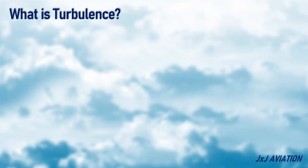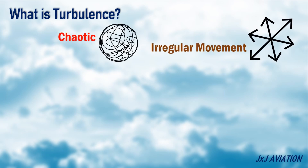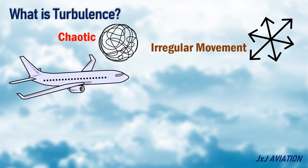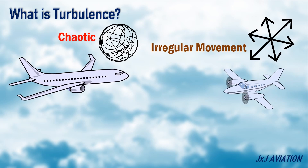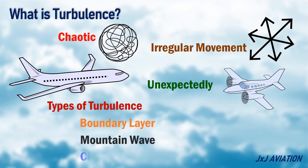First, let's look at what is turbulence. Turbulence refers to chaotic and irregular movement of air. This can cause an aircraft to shake or vibrate violently and unexpectedly. There are three general types of turbulence: boundary layer, mountain wave, and clear air turbulence.